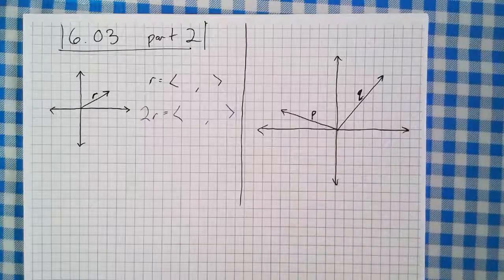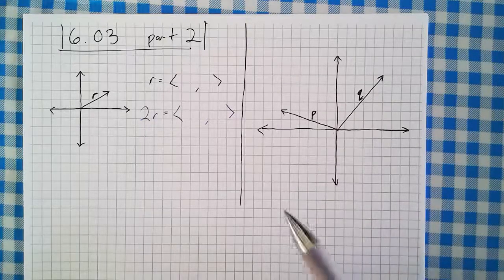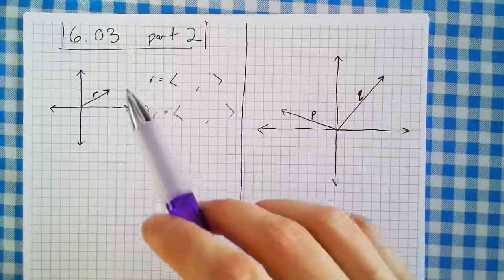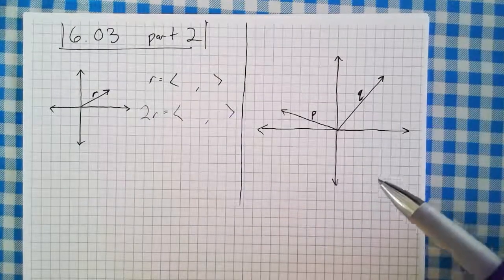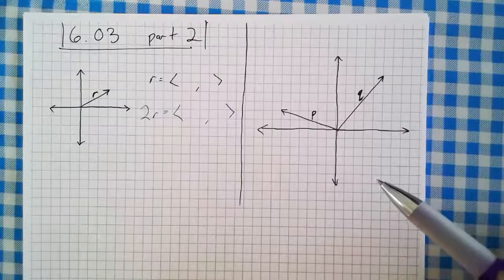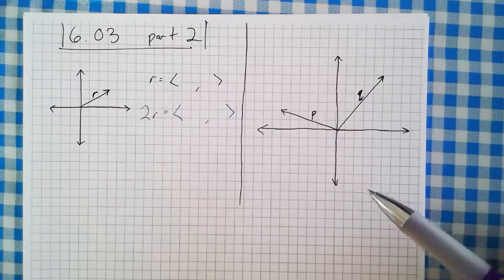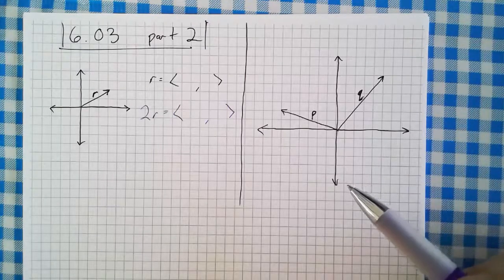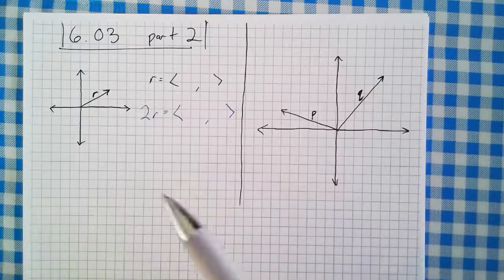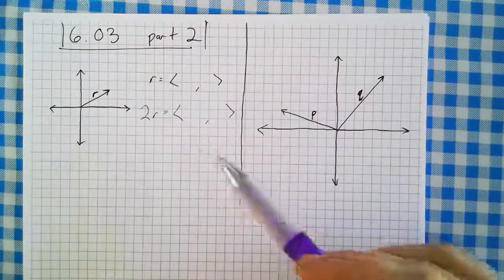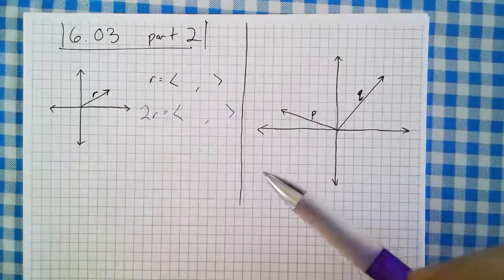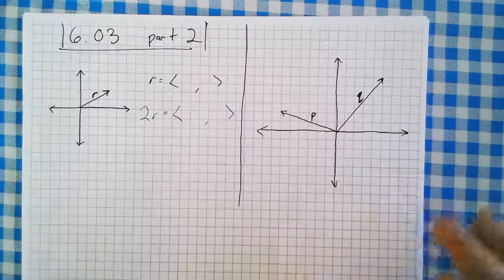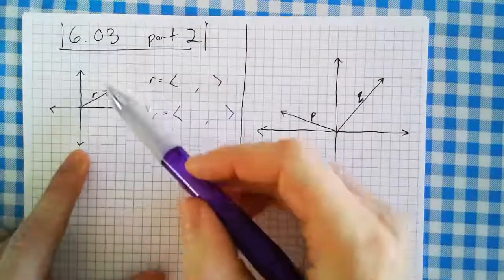Let's move on to the second part of this section, module 5, 6.03. We're talking about vectors. Last video we introduced vectors, talked about what their magnitude is and how to write them in component form. Here we're going to talk about multiplying a vector, or adding or subtracting vectors — that's the next thing we can do with vectors.